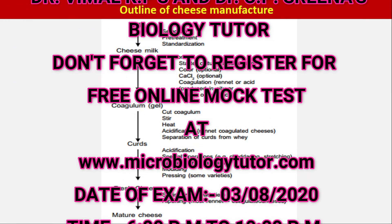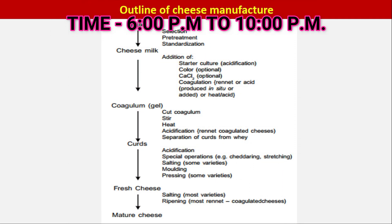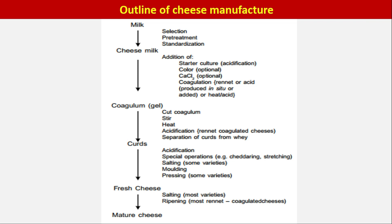Outline of cheese manufacture: milk selection, pretreatment and standardization of the milk, then cheese milk, addition of starter culture (acidification), then optional addition of color and calcium chloride, coagulation using rennet or acid produced in situ or added, or heat and acid, forming a coagulum gel, then the curds, then fresh cheese production, and finally maturing of cheese.